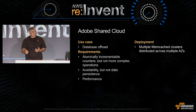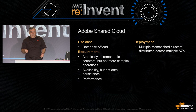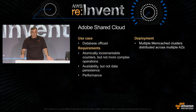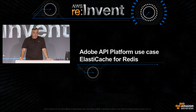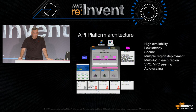That was their use case — basically a database offload use case, which is a very classic caching scenario. Let's delve a little bit more into ElastiCache for Redis. This is what we use in the API platform.